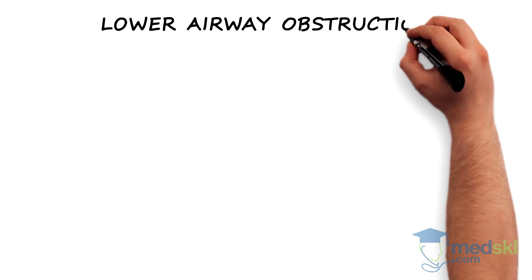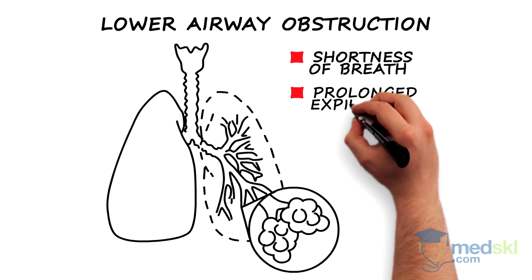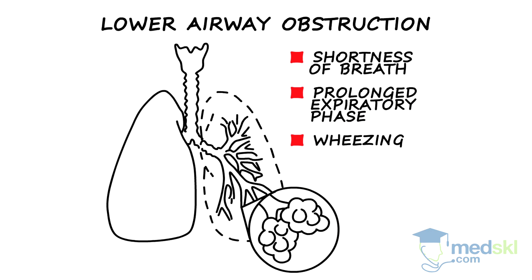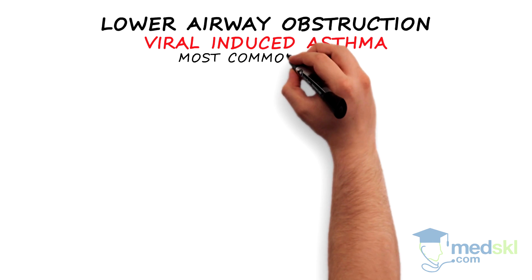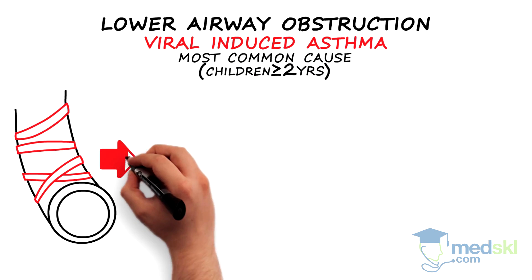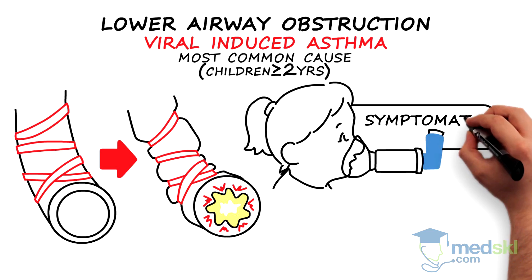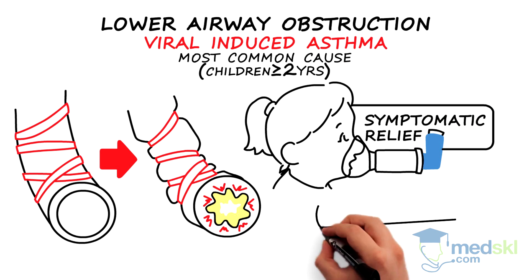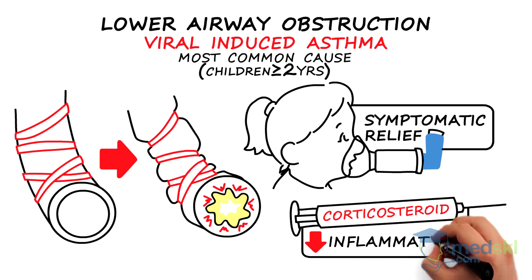Lower airway obstruction presents with shortness of breath, a prolonged expiratory phase, wheezing, and accessory muscle use. In children over two years old, viral-induced asthma is the most common cause for this presentation. Inhaled bronchodilators are used for symptomatic relief, but corticosteroids are essential to settle the lower airway inflammation.